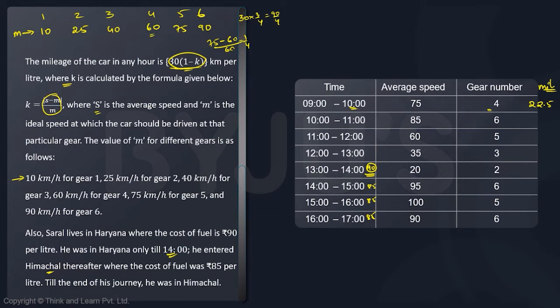This way you need to find the mileage - k for every hour and therefore the mileage for every hour. It's a pure calculation based thing, nothing much to think about. If you take one more example for the second hour, you're looking at the k value as |85 - 90| / 90. This is 5 by 90. Now my mileage will be 30(1 - 5/90), which is 30 × 17/18. 30 times 17 divided by 18 will end up being 28.33. You can use a calculator for this if you're not quick enough. This way you have to fill the mileage entirely.